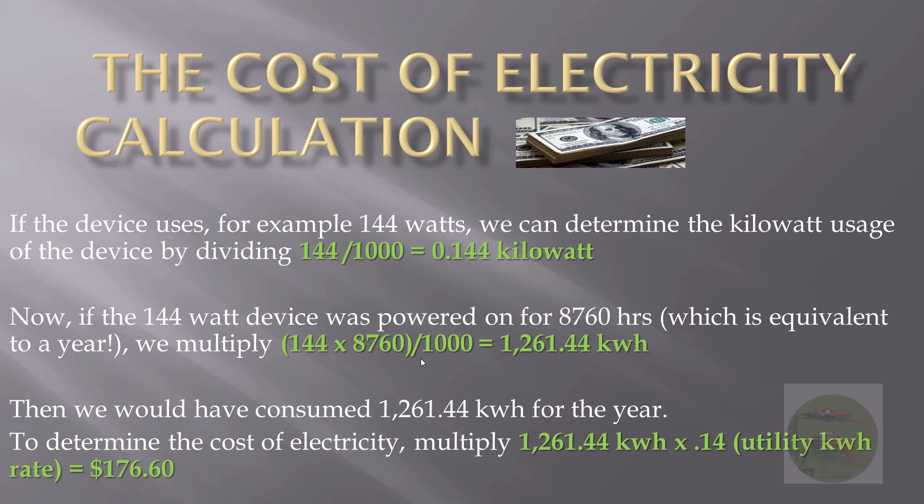Once you know that usage, given the utility rate — if the utility company tells you they charge 14 cents per kilowatt hour — then you multiply your usage by 14 cents, and that will give you the actual cost of electricity.